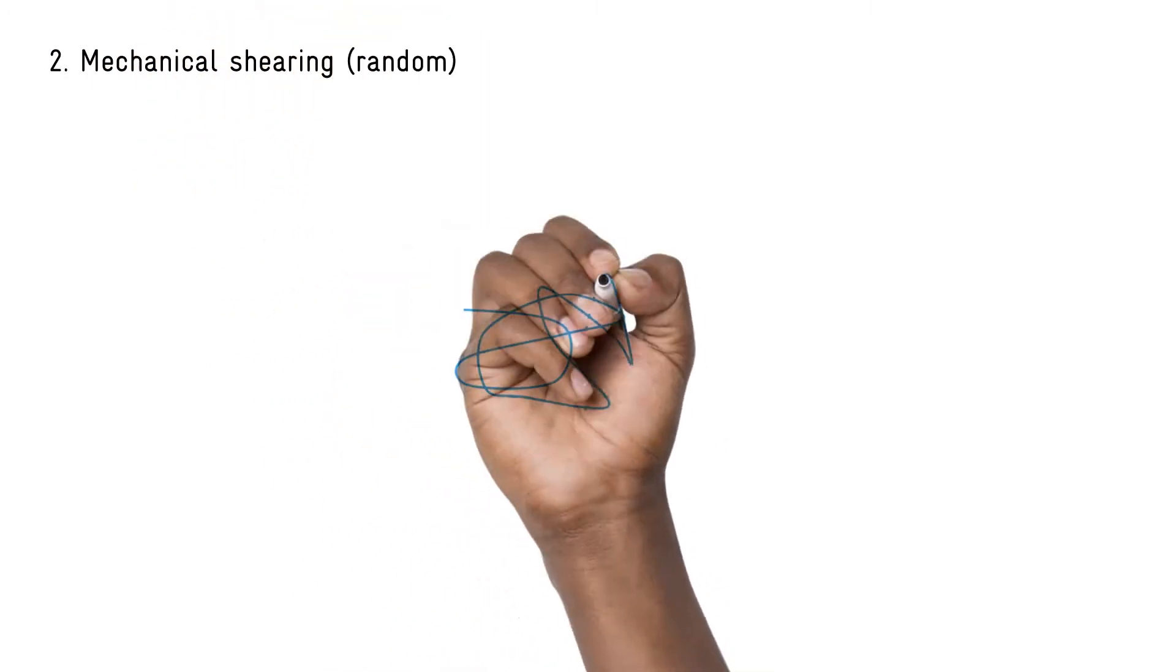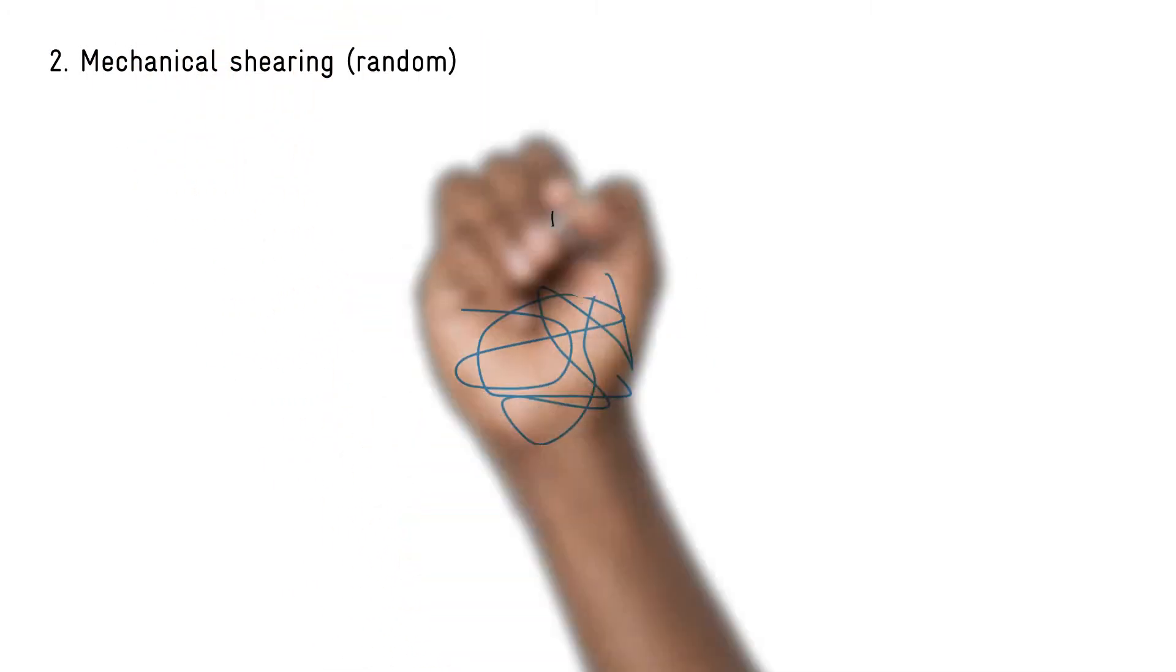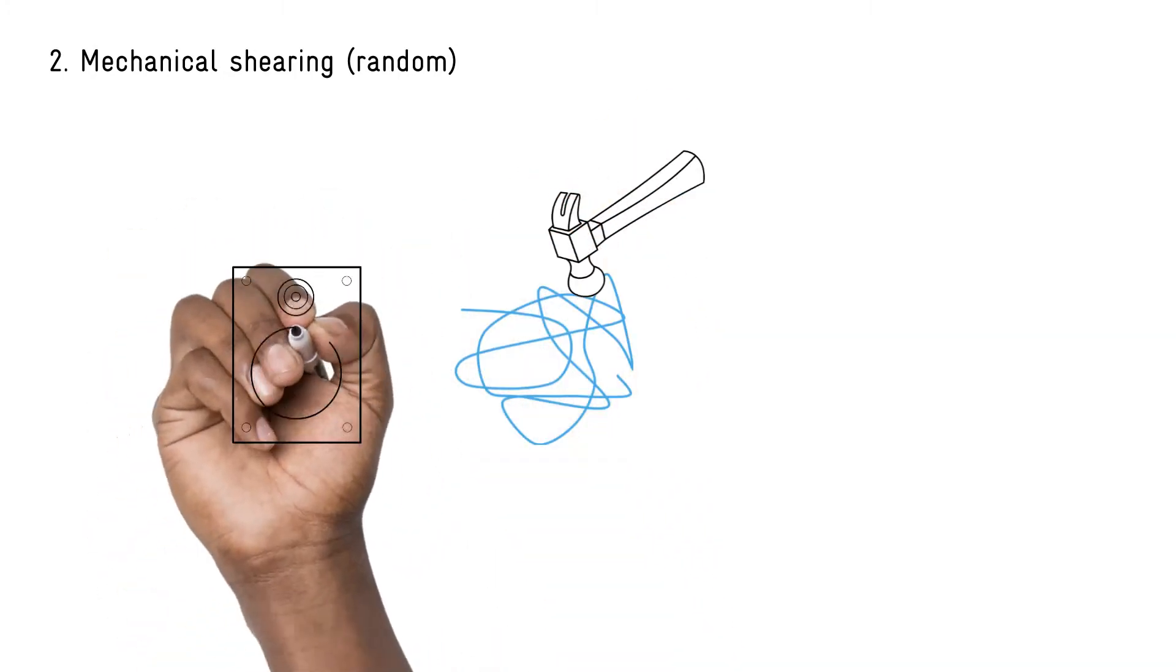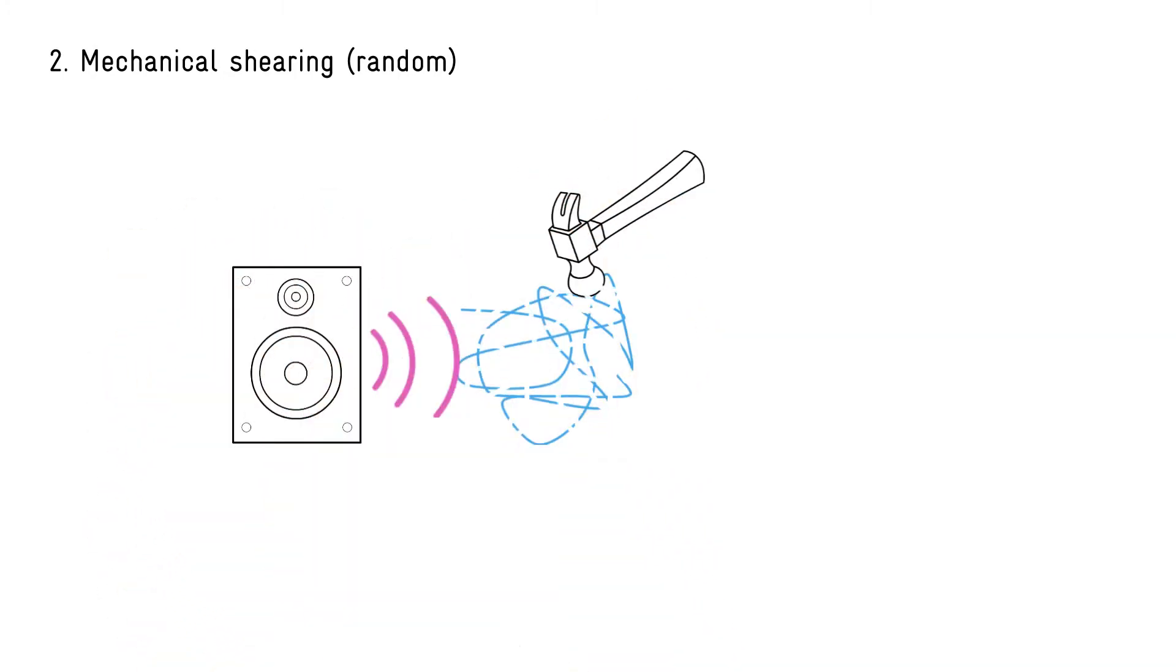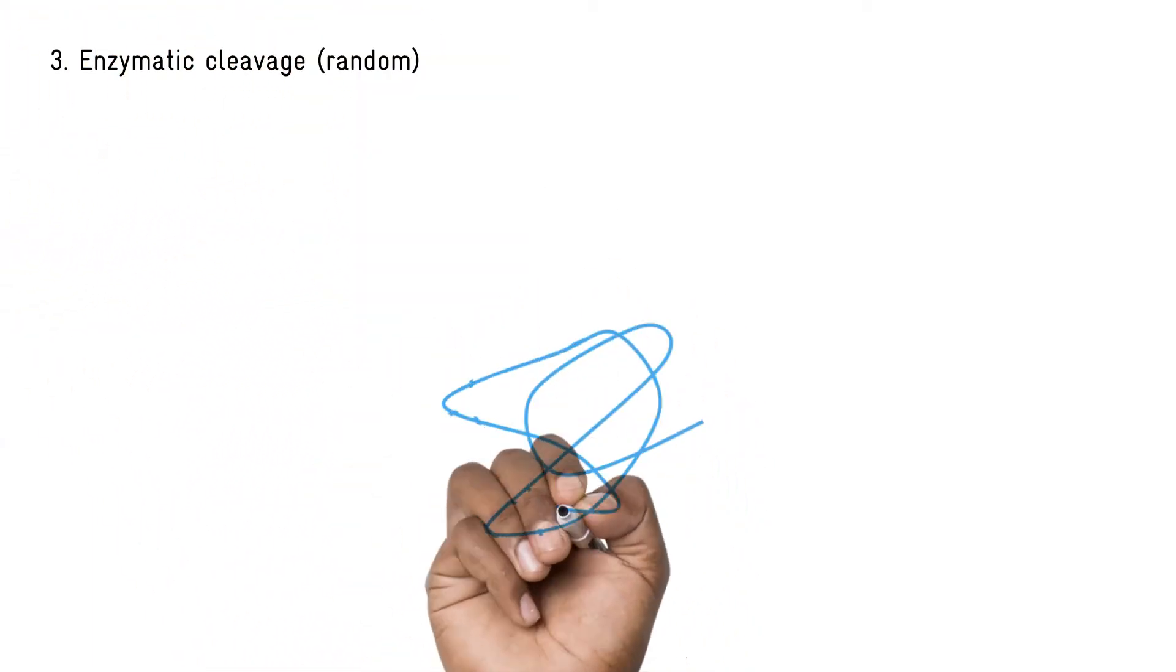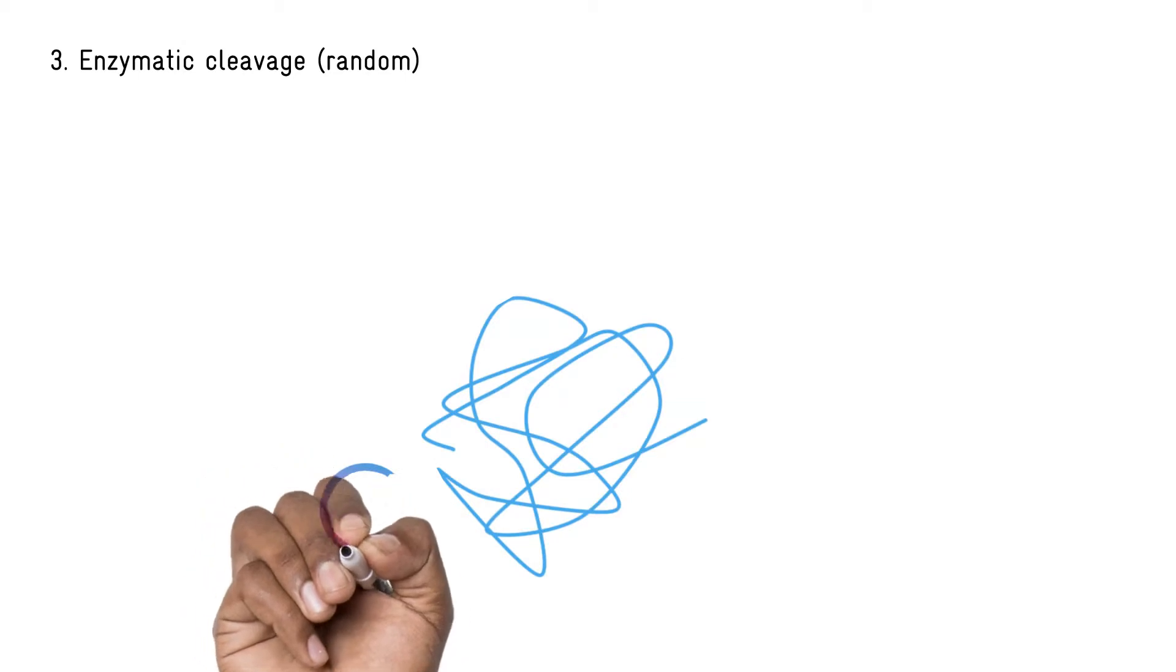Alternatively, you can break up DNA in a random manner with a mechanical method. This could be mechanical shearing of the DNA or using something like a sonicator to fragment the DNA. The third key method is to use an enzymatic approach, so enzymes can be used to randomly fragment your sample.